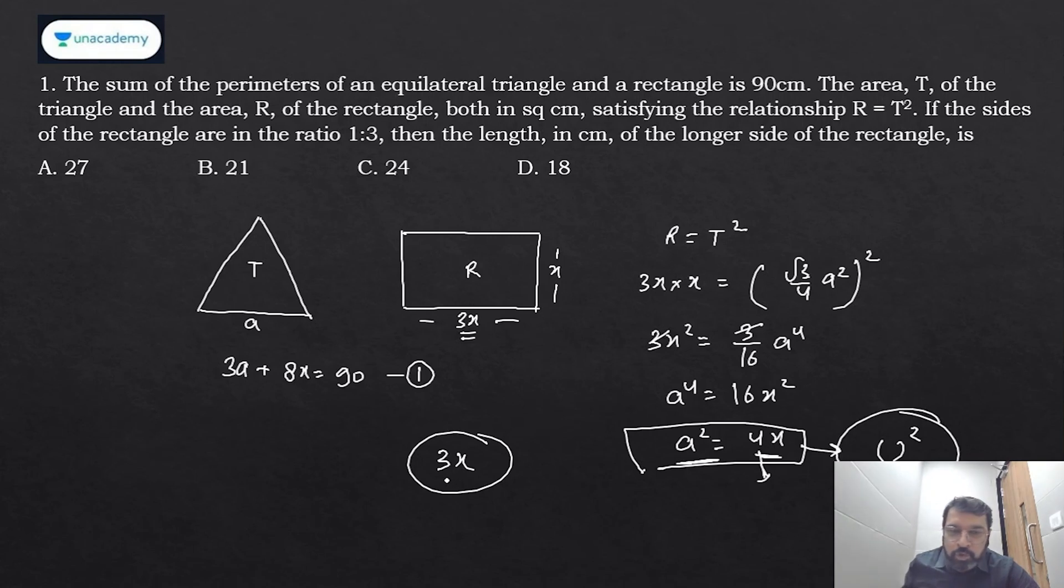Look at the options now. This is 3 × 9—3 times perfect square could be my answer. This is 3 × 7, ruled out. 3 × 8, ruled out. 3 × 6, ruled out. The only option left is A. We definitely saved time of solving these two equations and making it quadratic.